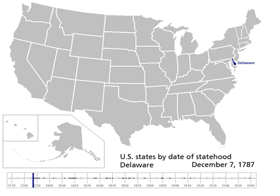Article 4, Section 3, Clause 1: New states may be admitted by the Congress into this union, but no new state shall be formed or erected within the jurisdiction of any other state, nor any state be formed by the junction of two or more states, or parts of states, without the consent of the legislatures of the states concerned as well as of the Congress.